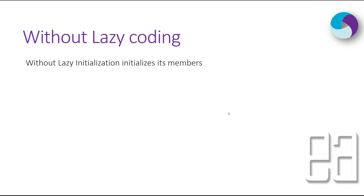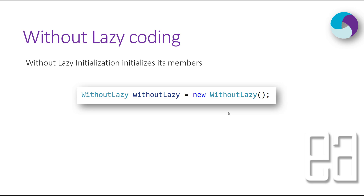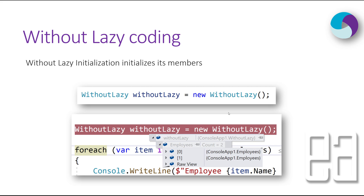Code without lazy initialization will initialize its members as soon as you call the class. For instance, we create a class called WithoutLazy, and once you call this class all its members are automatically instantiated. The constructor calls a method like GetEmployees and initializes all values, which is a very costly operation. If instead of two employees it's accessing a network to populate a whole bunch of data, that becomes very expensive for every single operation.